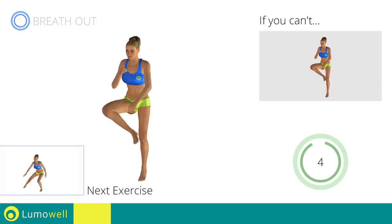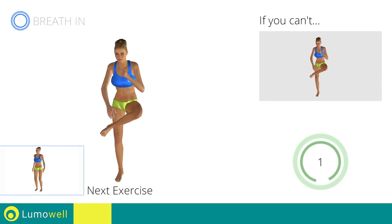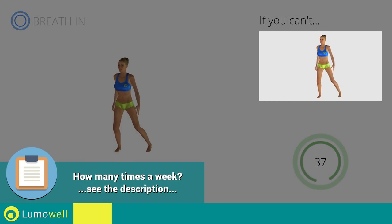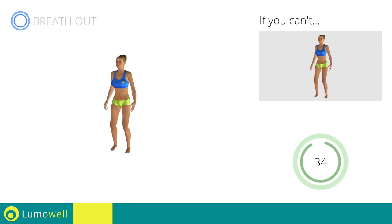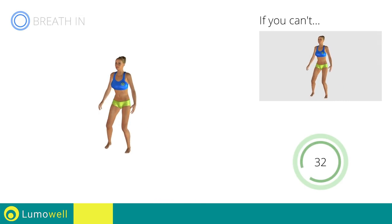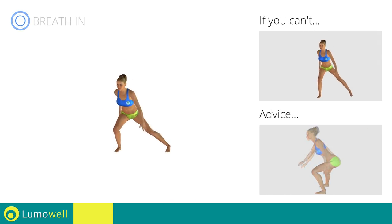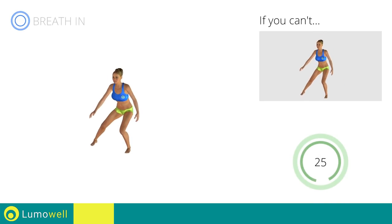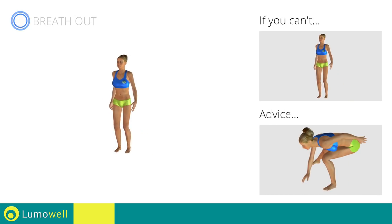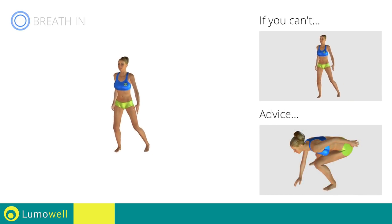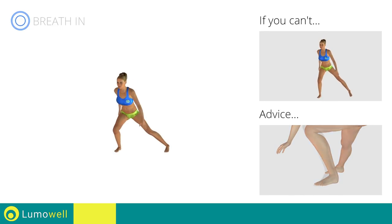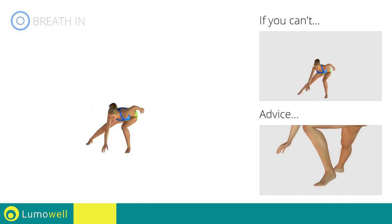Next exercise: alternate side lunge touching the ground. Go! If you can't do it, try bending the legs less. Be sure not to curve your back during the movement. Don't pass the line of your toes with your knees during the descent. Don't lift your heel during the lunge — your foot must always be firmly on the floor.